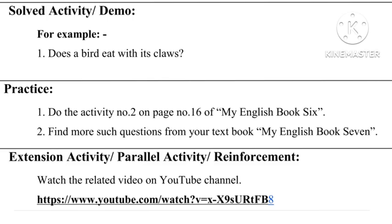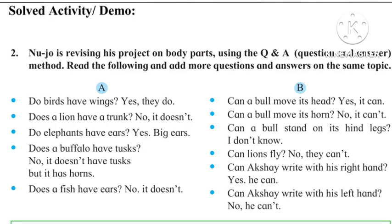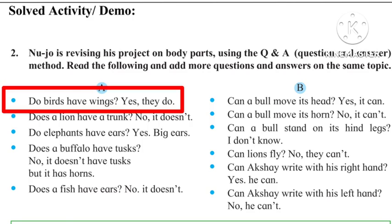The next part is practice. First, do activity number 2 on page number 16 of My English Book 6. Nujo is revising his project on body parts using the Q&A method. Read the following and add more questions and answers on the same topic. First question: Do birds have wings? Yes, they do.